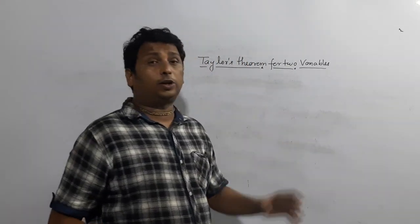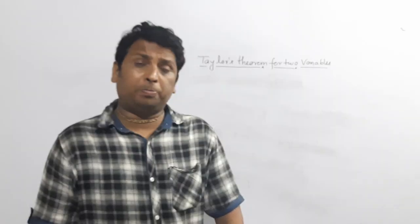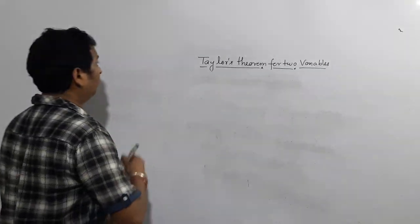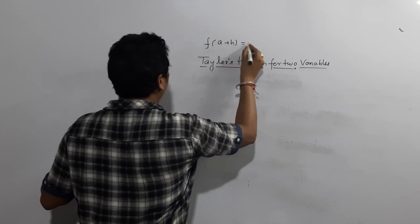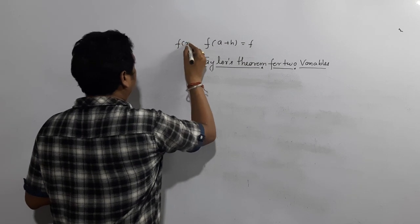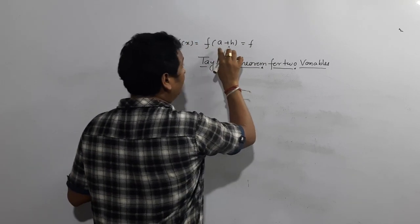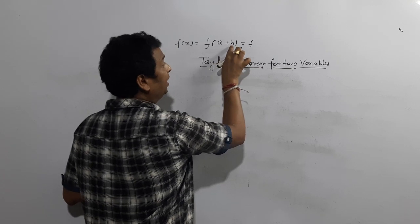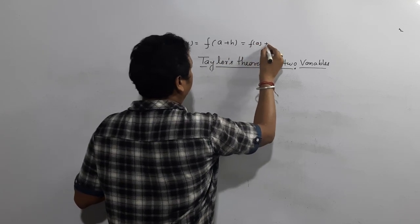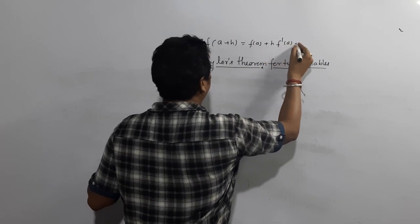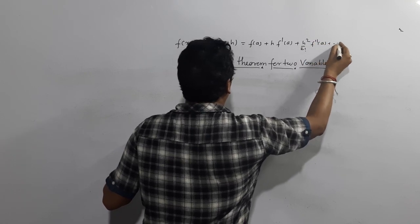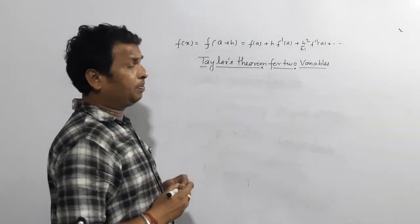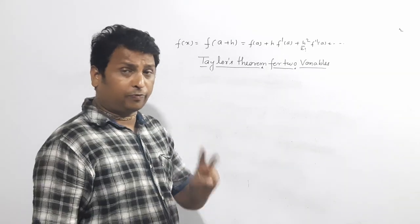I will explain the general term for two variables. The general term for one variable we have already gone through. That is f(c+h), which we can write as f(a) plus h·f'(a) plus h²/2! · f''(a) and so on, when expanding about a point a in powers of h. This is the general term for one variable. Similarly, we can define it for two variables.